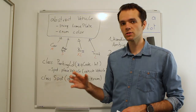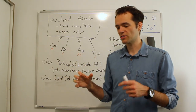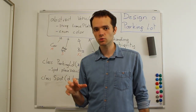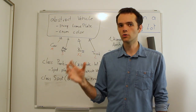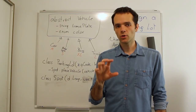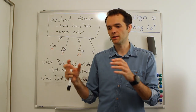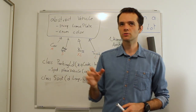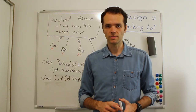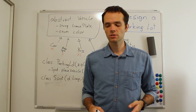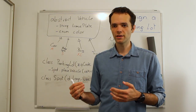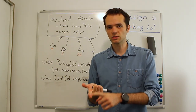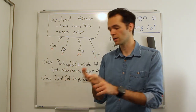If the interviewer asks you to code some part of this, we're getting into the algorithmic coding question. It makes sense to ask what the goal is. One twist could be: make placing and retrieving a car as efficient as possible. You should mention that in reality there would be a database backend storing all the information — where cars are, what spots we have, where our parking lots are.